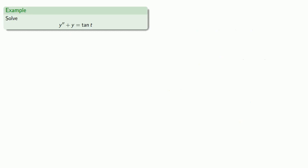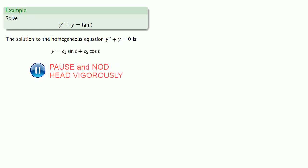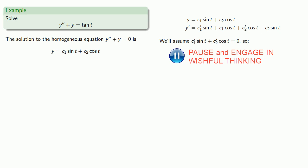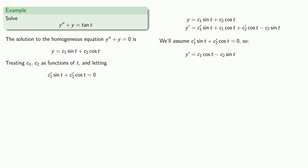Let's try to solve this differential equation which has no obvious annihilator. The solution to the homogeneous equation y double prime plus y equals zero is c1 sine t plus c2 cosine t. We'll treat c1 and c2 as functions of t so y prime is computed. We'll assume c1 prime sine plus c2 prime cosine equals zero. That simplifies our equation. We still need the second derivative.